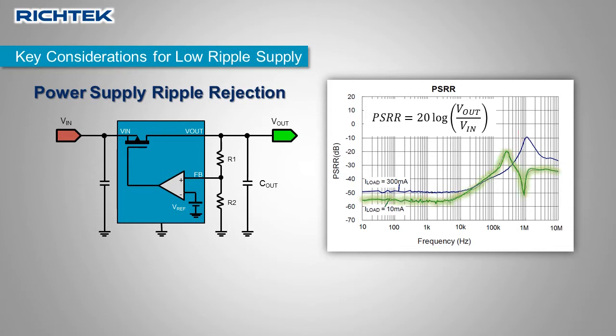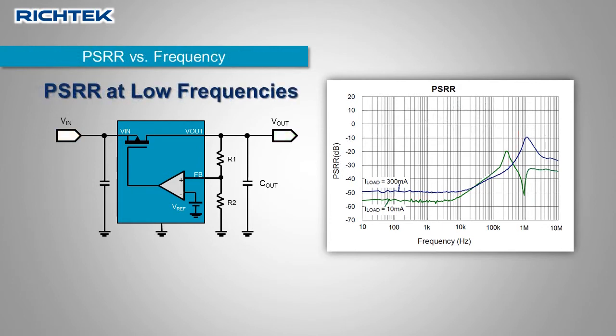The green curve is measured at low load and the blue curve is measured at high load. Generally at frequencies up to 10 kHz, LDOs have high open loop gain and can reject input supply ripple very well. In this region, loop gain at low loads is higher, so PSRR is better at low loads.